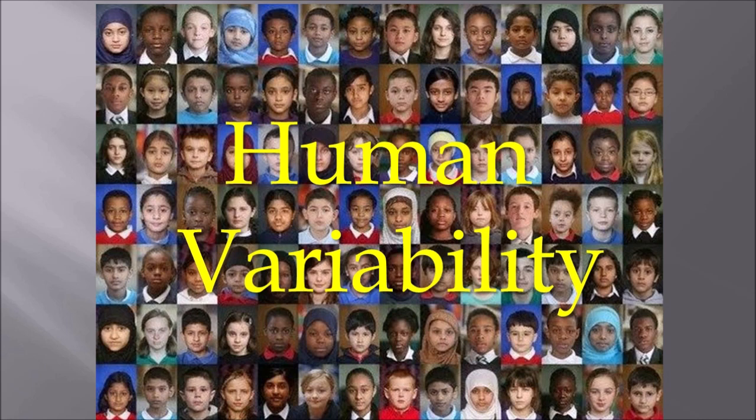Hi everybody. Today we're going to talk about human variability and variation. Why are we the way that we are? Why do different groups of people from around the world look different colors and shapes and sizes? And what, if anything, do these differences mean?